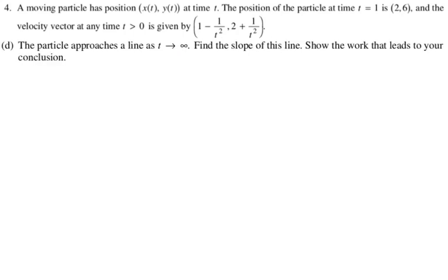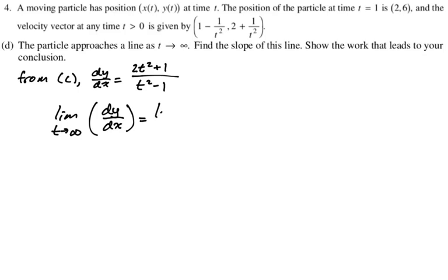And then we have one more question. The particle approaches a line as t approaches infinity. Find the slope of this line. Show the work that leads to your conclusion. So I'm going to import my dy dx from the previous part. So I'm going to say from part C, I know dy dx is 2t squared plus 1 over t squared minus 1. The question is just what's the limit of this as t approaches infinity. So we want the limit as t approaches infinity of dy dx, which will be the limit as t approaches infinity of 2t squared plus 1 over t squared minus 1.